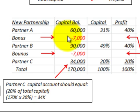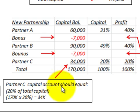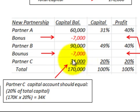Looking at our chart with the new partnership — partner A, partner B, and partner C — partner C's capital balance is calculated to be $34,000. They received 20% of the total capital of $170,000 upon being admitted into the partnership. $170,000 times 20% equals $34,000, which is shown on their capital balance.